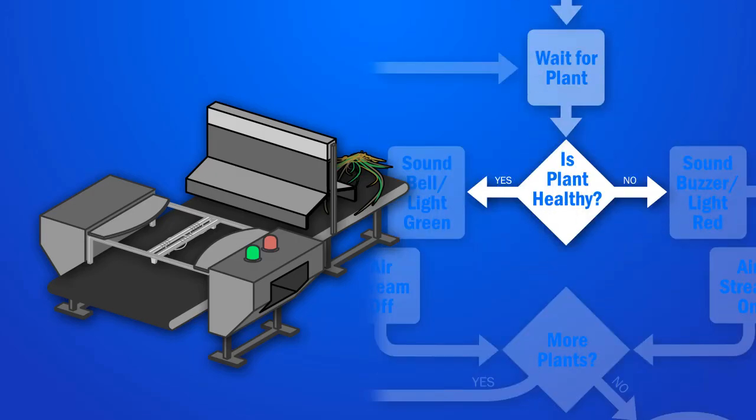This block is different. It's asking a question and has two arrows coming out of it. This is a decision block. The robot picks the arrow that matches the answer.